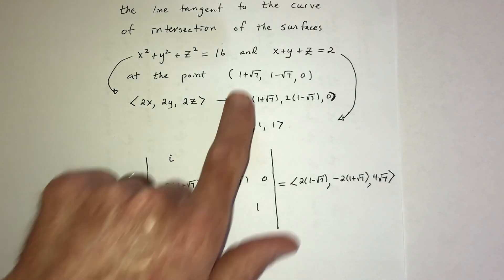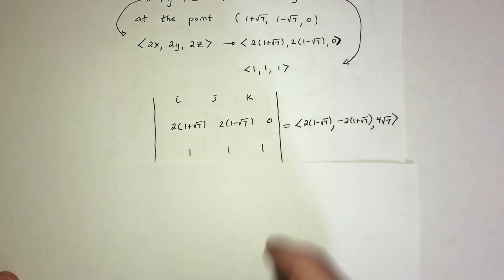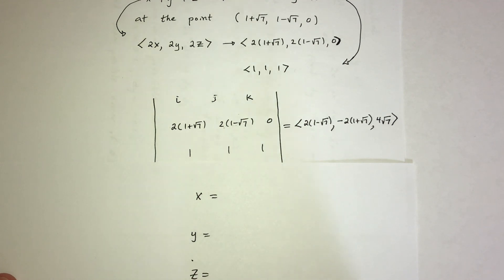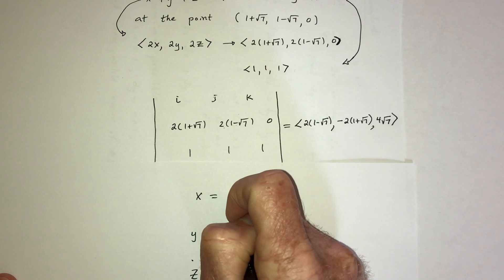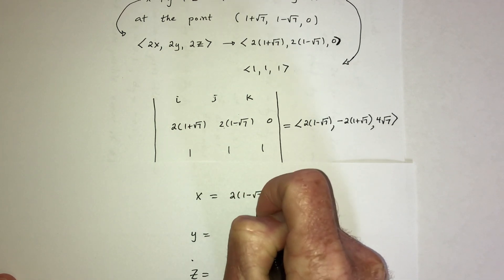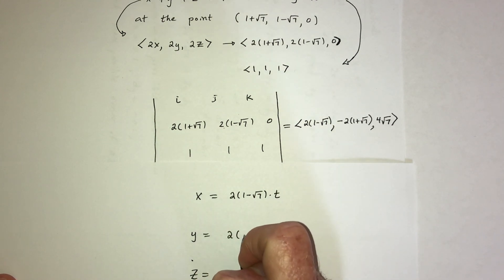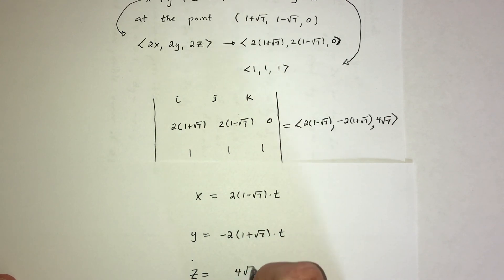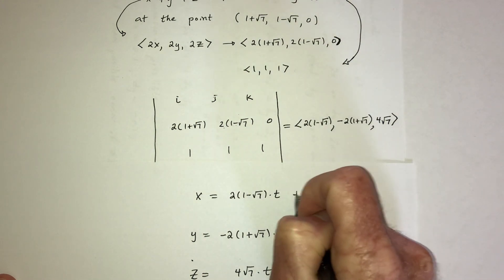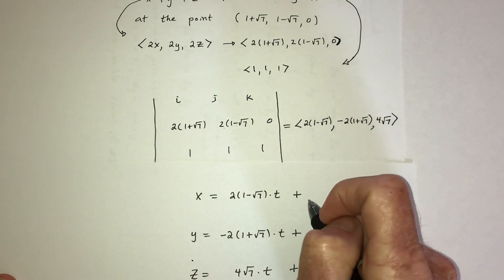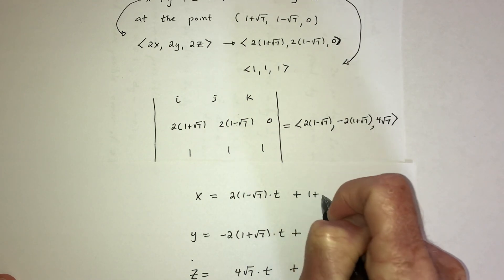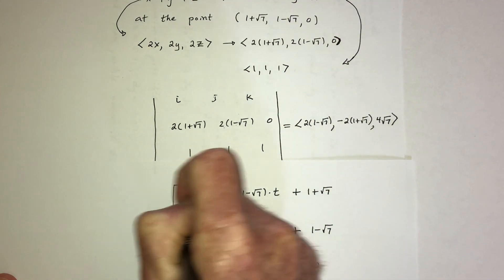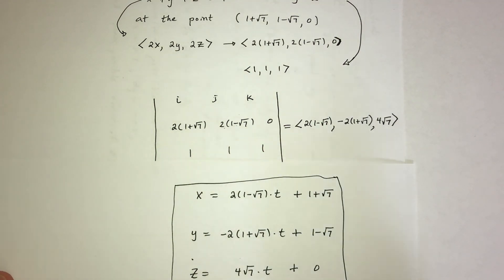Now we have the direction vector and the point (1 + √7, 1 − √7, 0). The parametric equation of the tangent line is: x = 2(1 − √7)t + (1 + √7), y = −2(1 + √7)t + (1 − √7), z = 4√7 · t + 0.